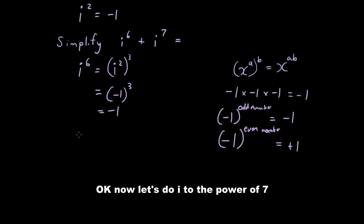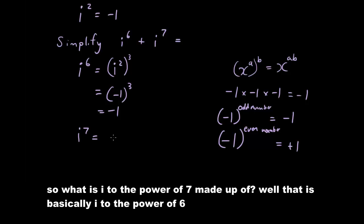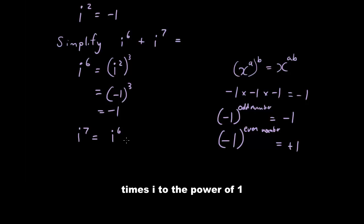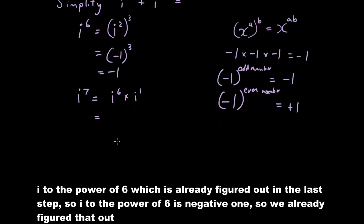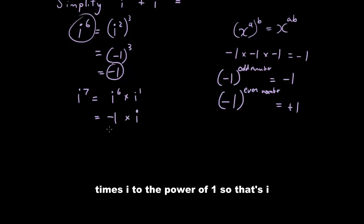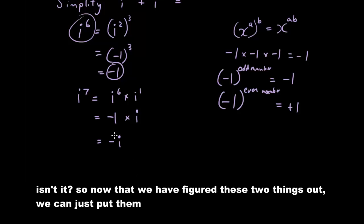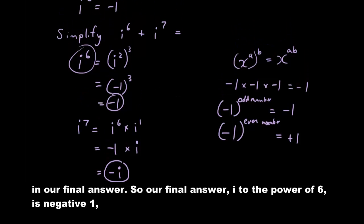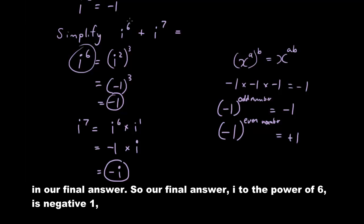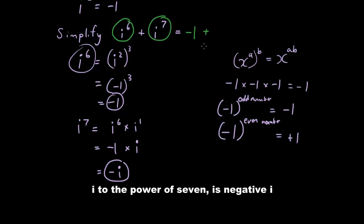Now let's do i to the power of 7. i to the power of 7 is made up of i to the power of 6 times i to the power of 1. i to the power of 6 we already figured out in the last step — it's negative 1. Times i to the power of 1, which is just i. So negative 1 times i is just negative i. So now we have figured out both parts and we can put together our final answer: i to the power of 6 is negative 1, plus i to the power of 7 is negative i.